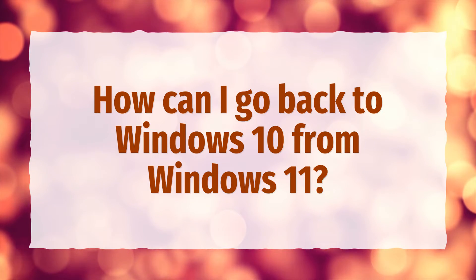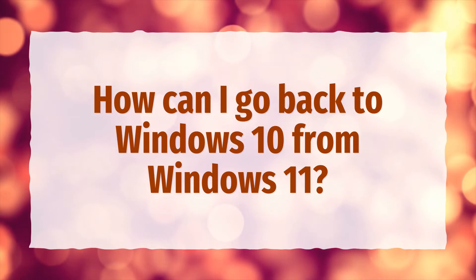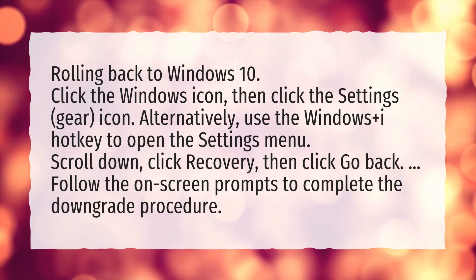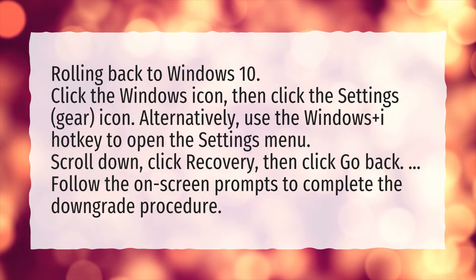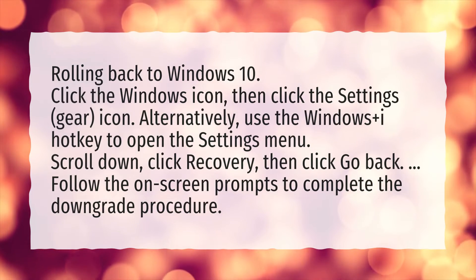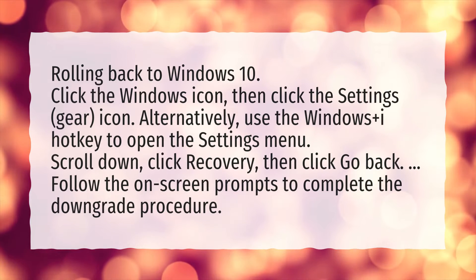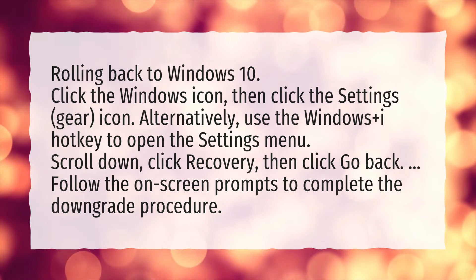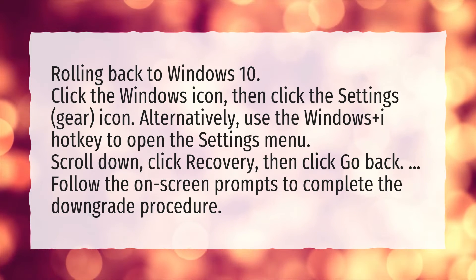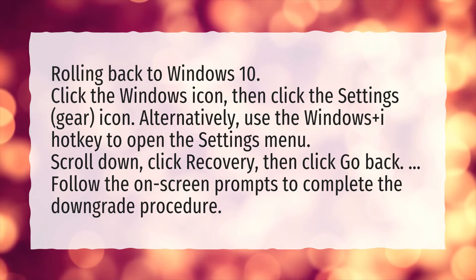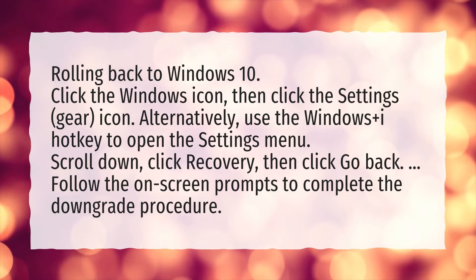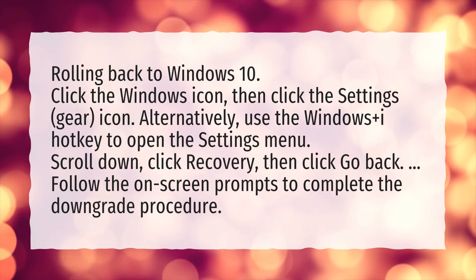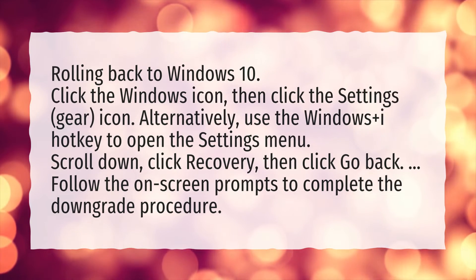How can I go back to Windows 10 from Windows 11? Rolling back to Windows 10: Click the Windows icon, then click the Settings Gear icon. Alternatively, use the Windows plus I hotkey to open the Settings menu. Scroll down, click Recovery, then click Go Back. Follow the on-screen prompts to complete the downgrade procedure.